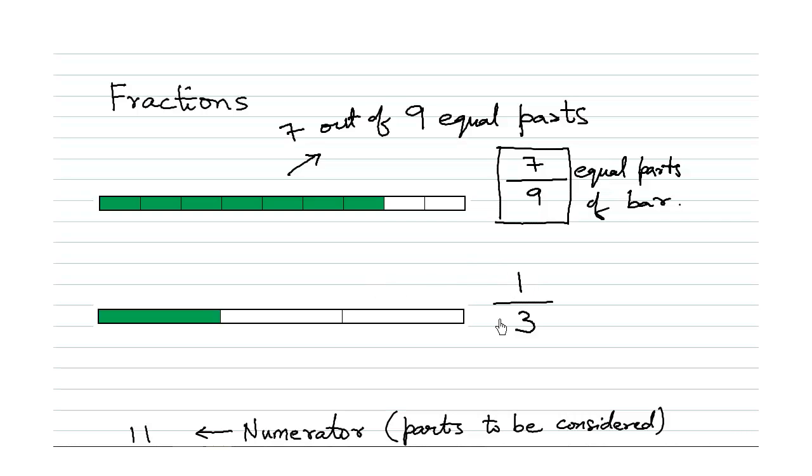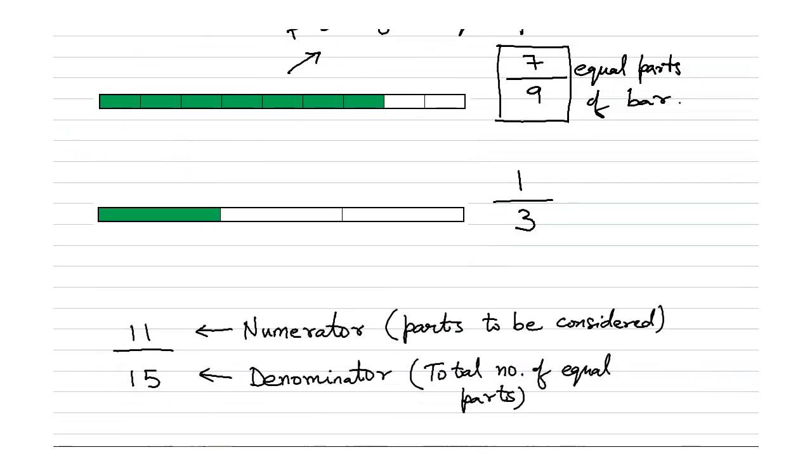And you are giving one out of the three parts to someone else. So you're giving one out of three part to somebody else. So this also becomes a fraction, one upon three.